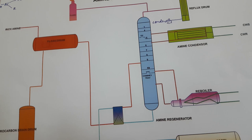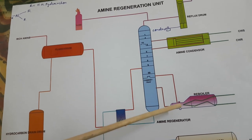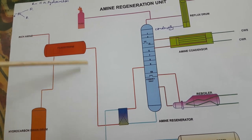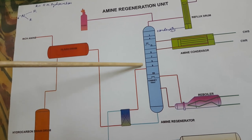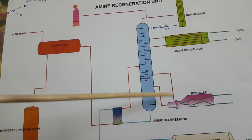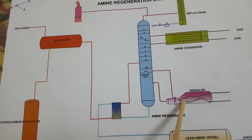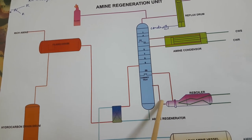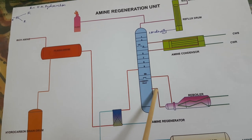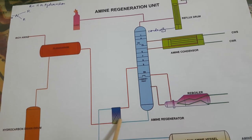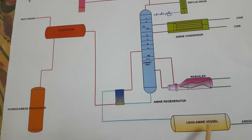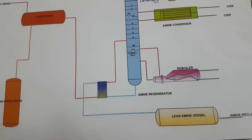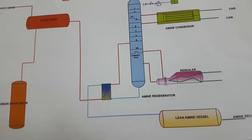Now let's go for the most important equipment, which is the heart of the plant — the reboiler. The reboiler heats the amine. We call it a reboiler because the rich amine going in is already preheated, so we reboil it. In the reboiler we use steam as a heating medium. Rich amine comes in, gets heated, sour gas vapor goes out, and lean amine is collected at the bottom and goes to the lean amine vessel.